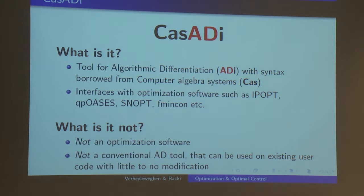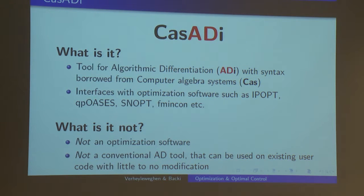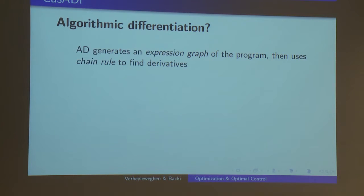What is CASADI not? It is not in itself an optimization software — the actual solving is done by other solvers such as fmincon. It is also not a conventional automatic differentiation tool where you can take any existing program and put it into CASADI to get the Jacobian. You need to do a little bit of work, but it's straightforward, as I'll show by a couple of examples.